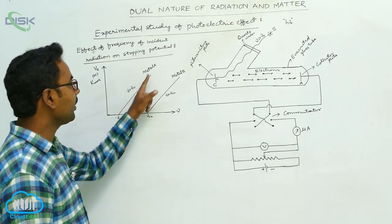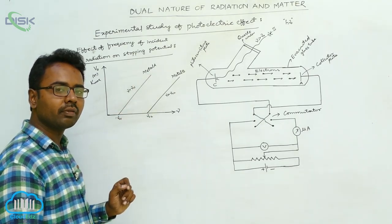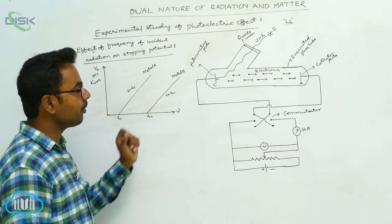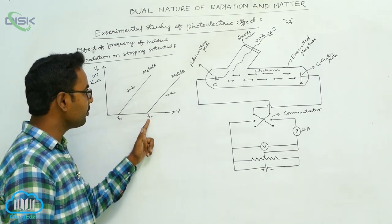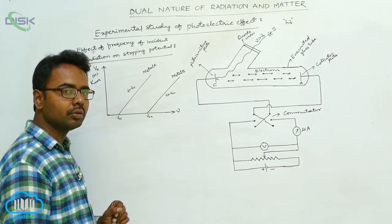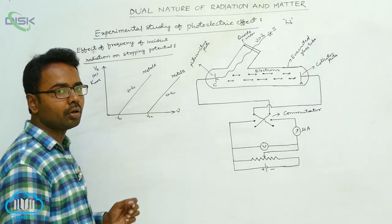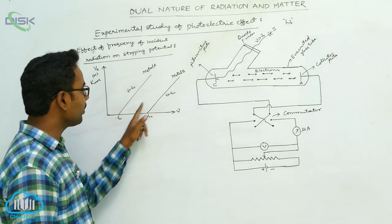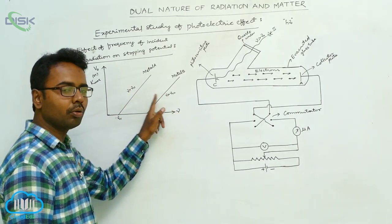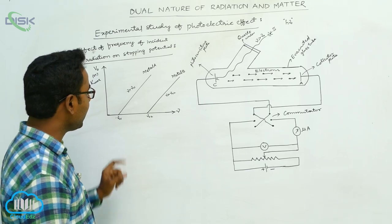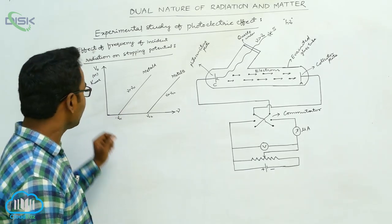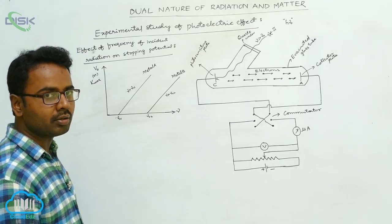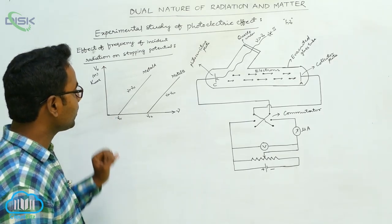The threshold frequency is the minimum frequency for a metal surface, and its value is different for different metal surfaces. For metal surface B, the threshold frequency may have a different value, ν₀₂. For both metal surfaces, when the frequency is greater than the threshold frequency, as we increase the frequency the stopping potential and maximum kinetic energy of photoelectrons increase.